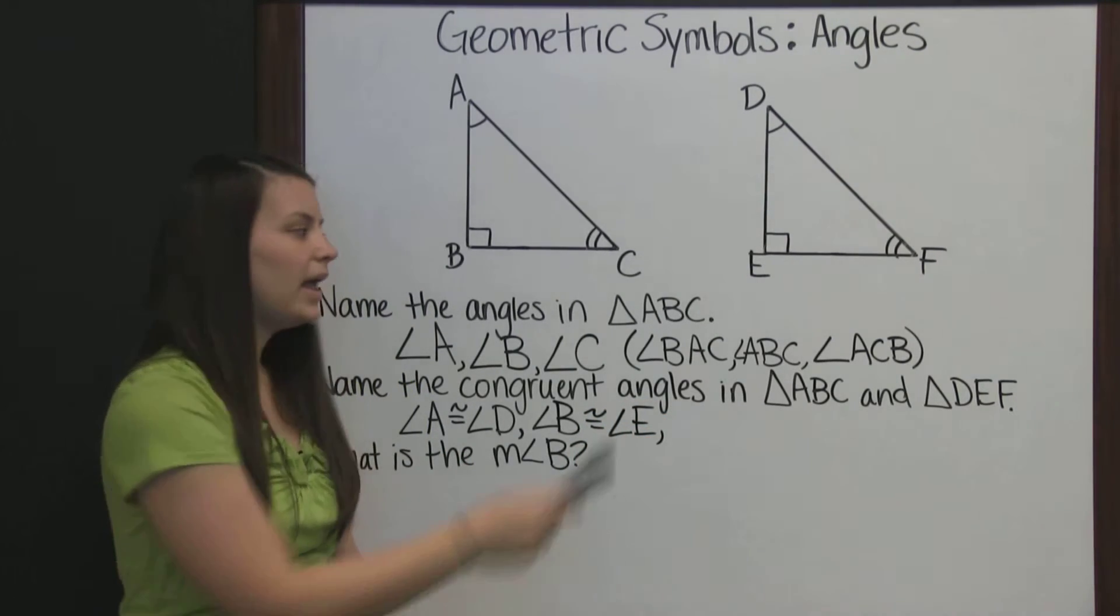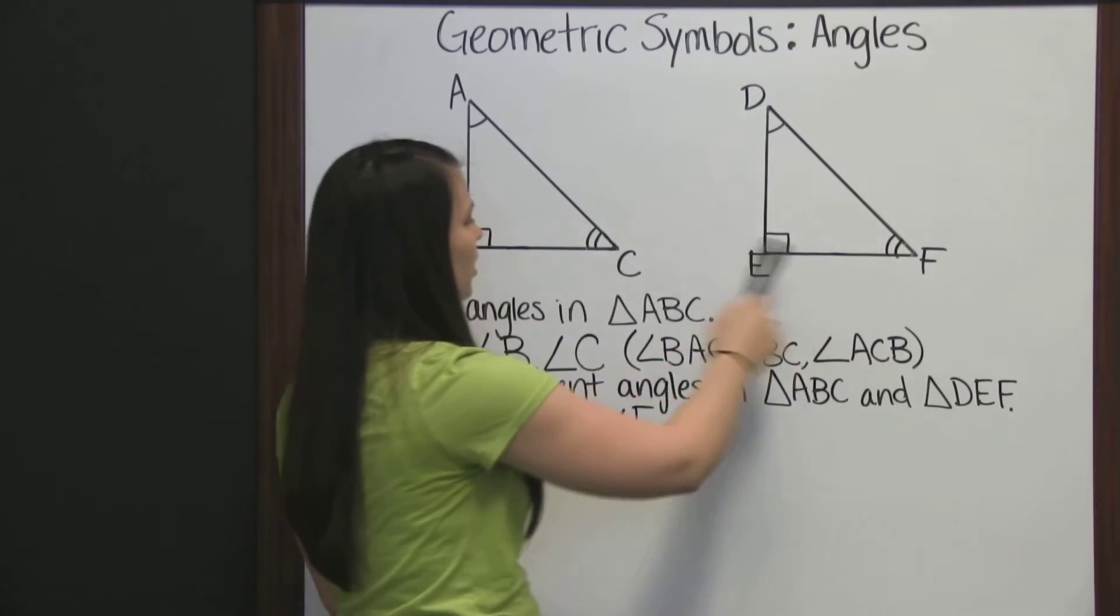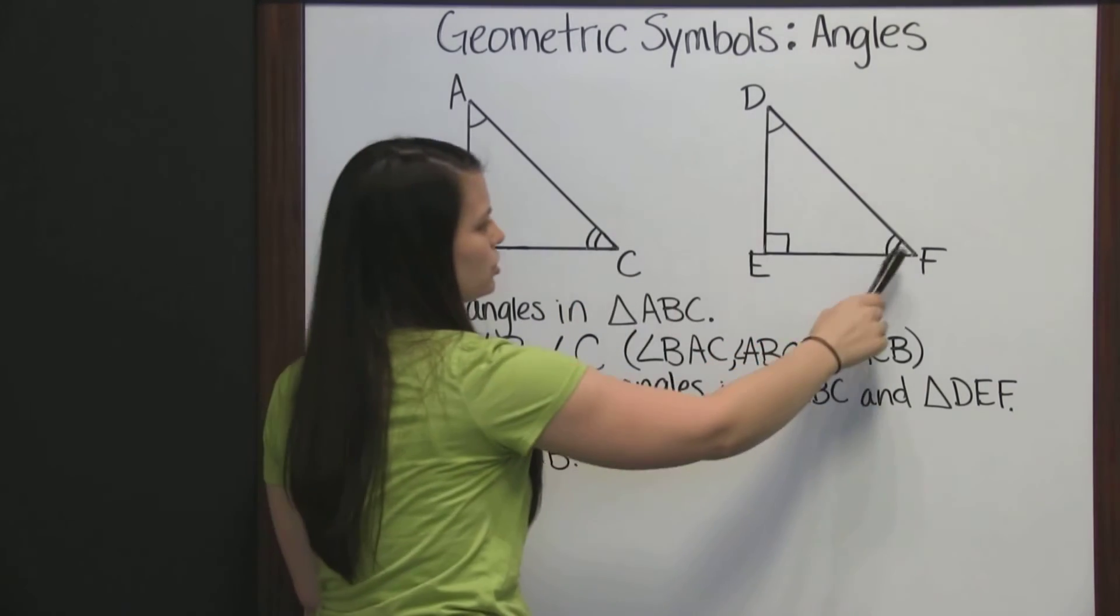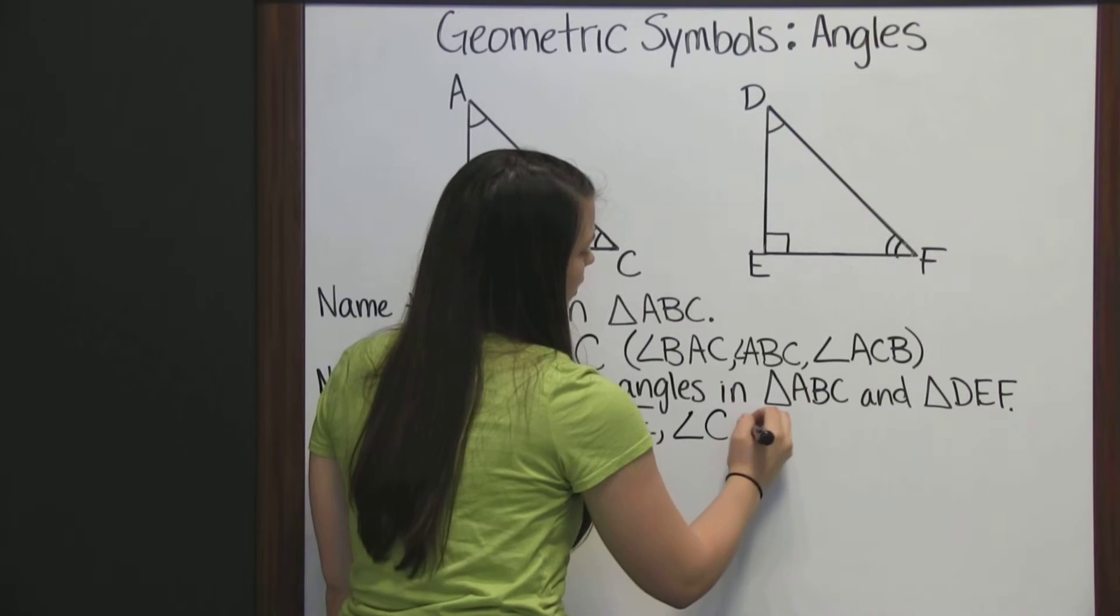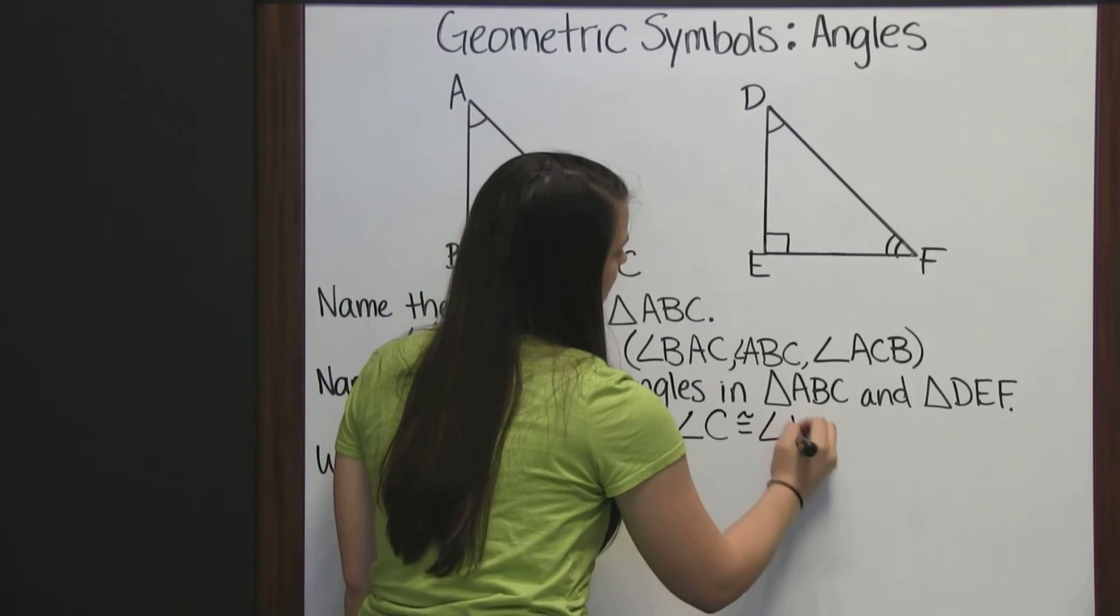Finally, angles C and F are marked the same way. They both have two marks on the angle, so they are congruent to each other. Angle C is congruent to angle F.